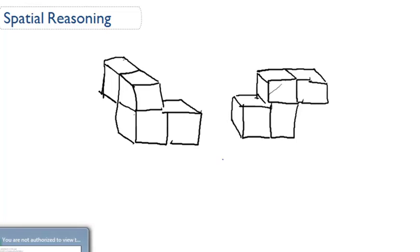All right, spatial reasoning, the final topic under three-dimensional figures. So for spatial reasoning, what it is, is actually looking at two different three-dimensional shapes and comparing them and saying, and determining whether or not they are the same shape, just in different orientations.